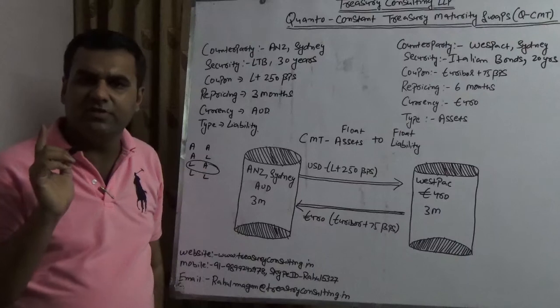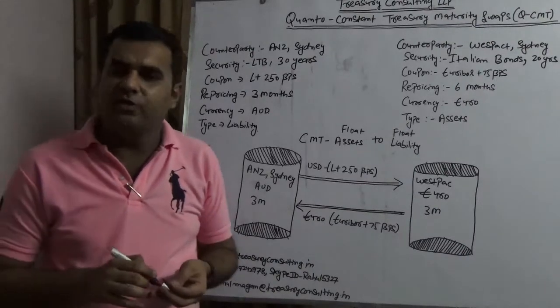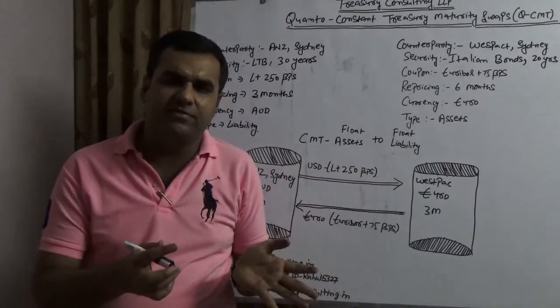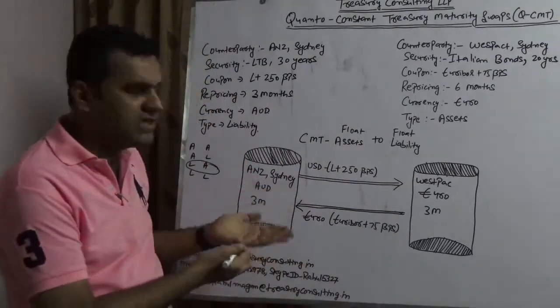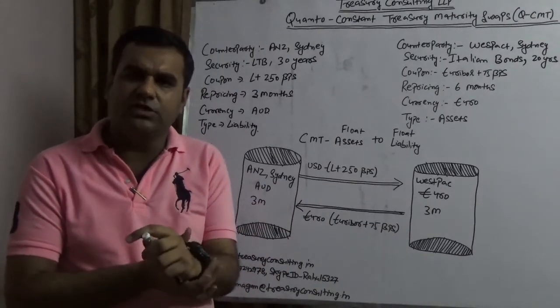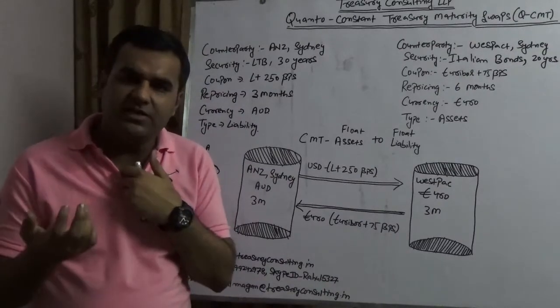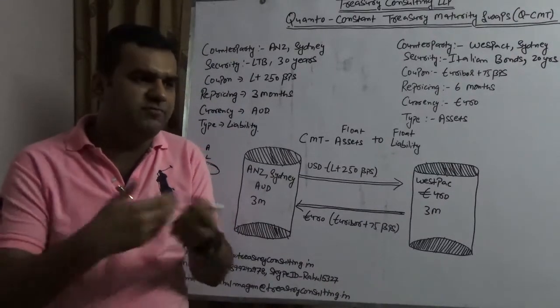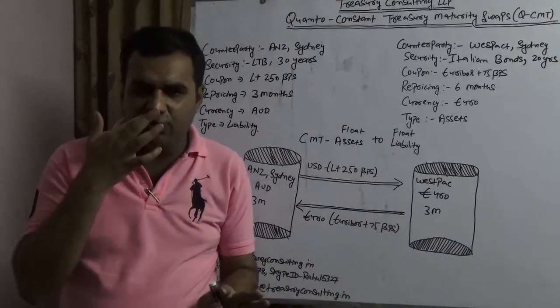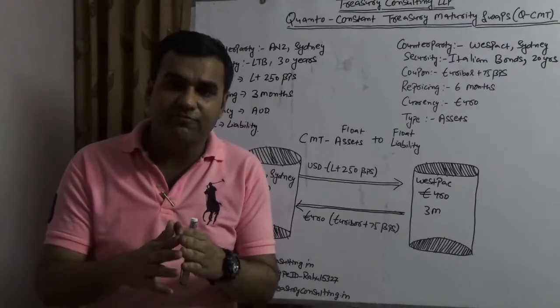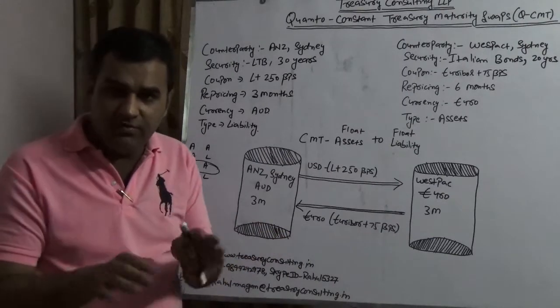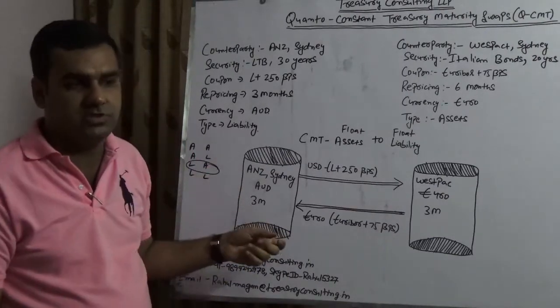Before explaining, I would like to tell you one thing very clearly - majority of the time, the documents of the derivatives which we have on the internet are not telling you these kind of things. If you take the definition of the CMS or CMT from the internet, 99% you get to know that this is all about float to float swaps. But this is not ideally the case. Every time it is not float to float. Sometimes you have fixed to fixed swap also, you have quanto swap also. No one will tell you that you have the liability to asset swap also in CMS.